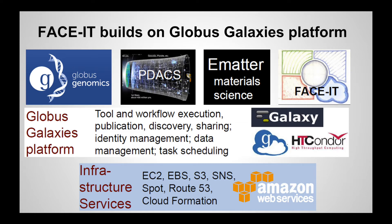The Globus Galaxies platform uses a number of different key underlying technologies, the primary ones of which are Galaxy and Globus, but also other technologies for high-performance computing and high-throughput computing. The platform is based around providing a number of different services: tool workflow execution, discovery, identity management, data management, and infrastructure. Everything we're going to show here in FaceIt is being done on Amazon Web Services, using computing resources generously donated from Amazon.